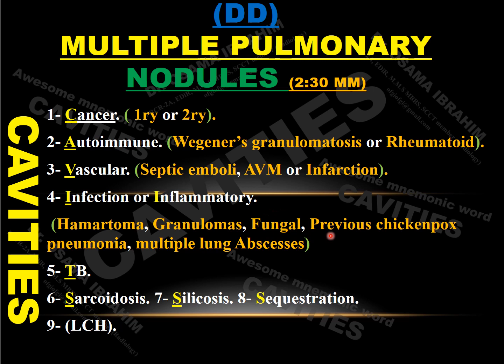I is for infections or inflammations: old granuloma, hematoma, fungal infections, previous pneumonia, or lung abscess. T is for TB. I is also for inflammation. E is for — and S is for sarcoidosis, silicosis, and sequestrations, which can also be a cause for solitary lung nodules in the lower lobes as a congenital cause appearing in adult films. Langerhans cell histiocytosis can also be considered. The mnemonic CAVITIES covers all causes for multiple pulmonary nodules.